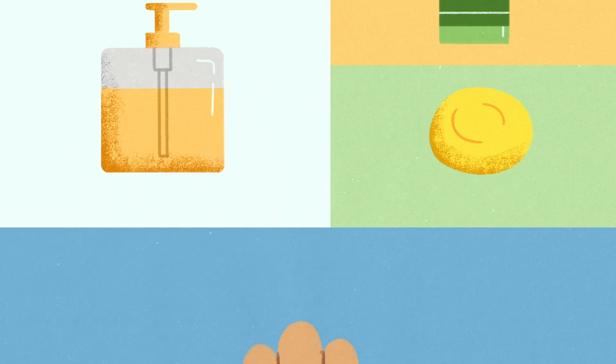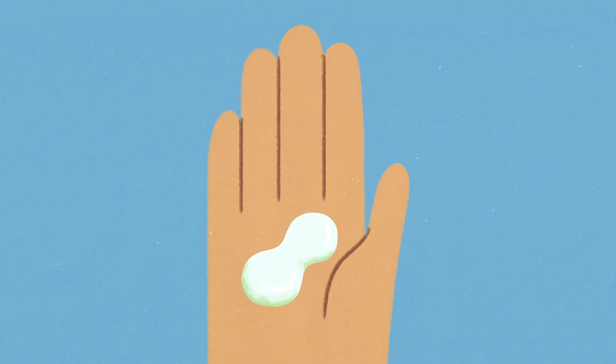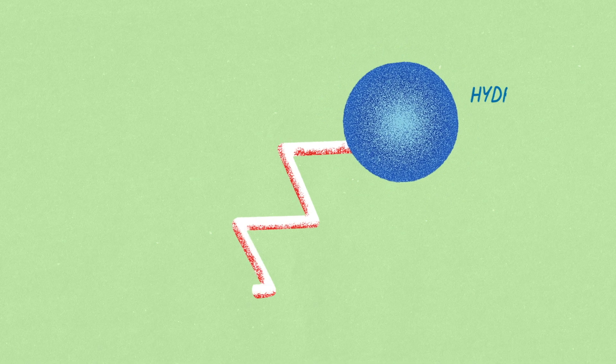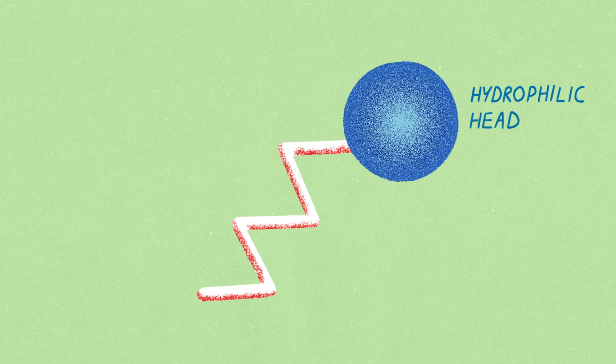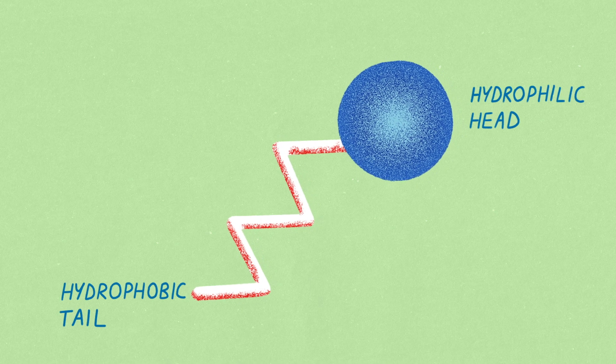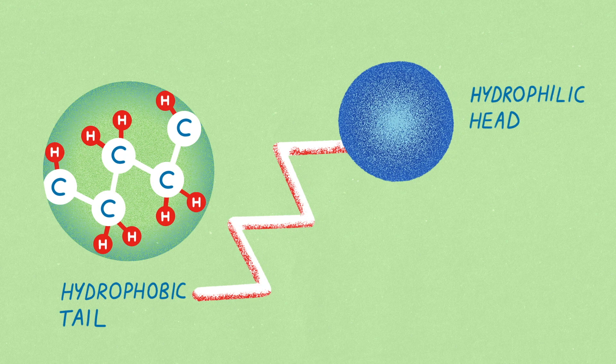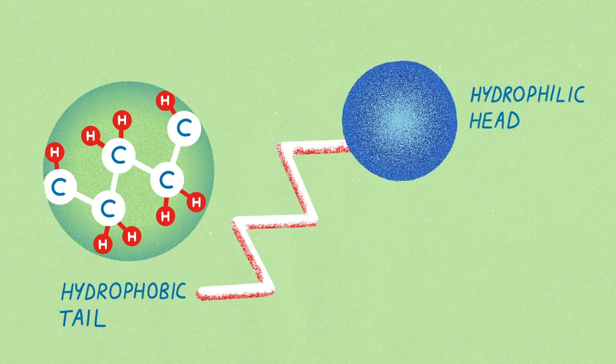Let's take a closer look at that dollop of soap in your hand. A soap molecule consists of a head that is hydrophilic, attracted to water, and a long hydrocarbon tail made of hydrogen and carbon atoms that is hydrophobic, or repelled by water.